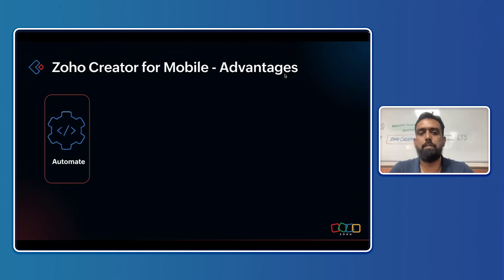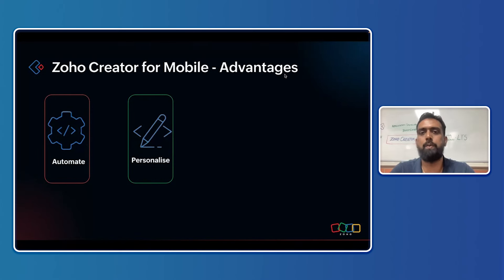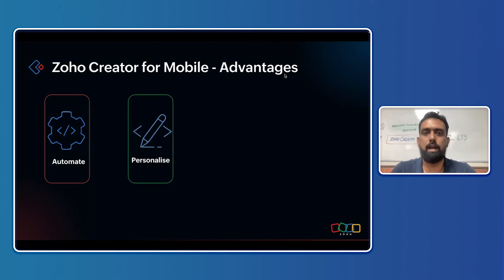The advantages of using Zoho Creator for mobile include: automation of workflows and swipe gestures specific to mobile; personalization options where you can rebrand the application, use your own logo and themes — this is vital when developing apps for partners or customers who want the app in their theme; and users always remember an app's theme and logo, so personalization plays a major role.